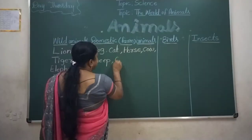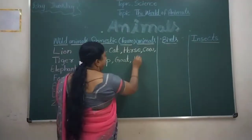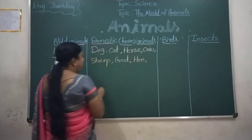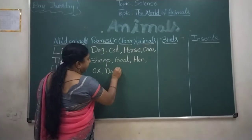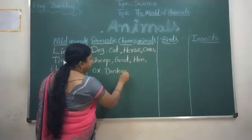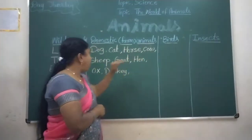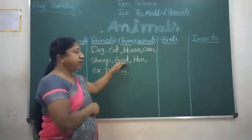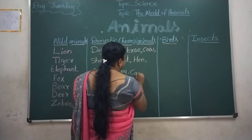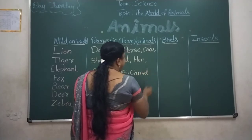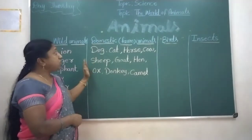Goat, hen, ox, donkey, camel. See, these are domestic animals.